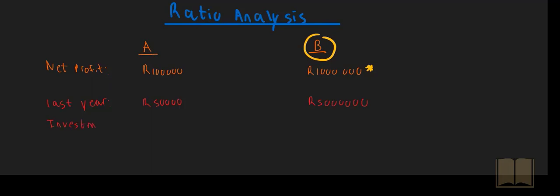What if in order to get 100,000 Rand net profit, there was an investment of only 2 Rand in Company A? So 2 Rand gave you 100,000 Rand profit. Whereas in Company B, an investment of 2,000,000 Rand gave you a net profit of 1,000,000 Rand.